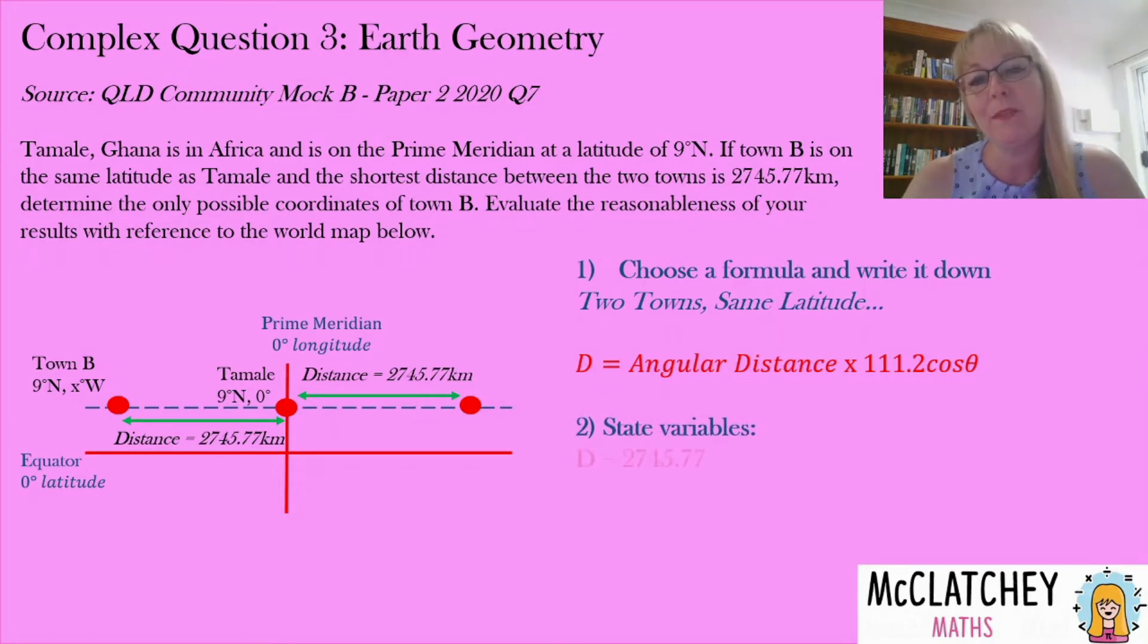Okay so we're going to state our variables. Now this is important because we know we've got d. That distance is 2,745 kilometers between the two towns. We've worked out d. We have worked out that they've got a common latitude. That's going to be our value for theta. That's going to be nine. We know 111.2. That's the constant that stays in the question. So what we are trying to find out is that angular distance. I'm going to replace that with the variable x because it's a pain to write angular distance every single time.